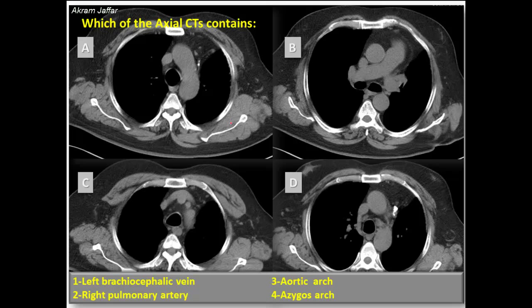Which of the axial CTs contains the left brachiocephalic vein, right pulmonary artery, aortic arch, and the azygous arch?